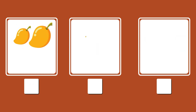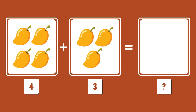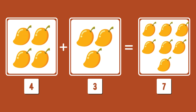Let's move to the next one. This time I have got some mangoes. I have got four mangoes and three more. How many mangoes do I have? I have got seven mangoes.